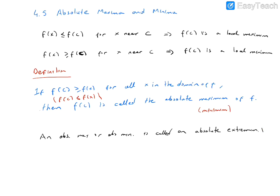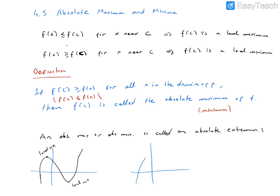For example, looking at this graph of the function, this is a local maximum value and this is a local minimum value — there is no absolute minimum or absolute maximum here. But if you consider the negative x-squared type function, this point is the absolute maximum. All absolute maxima are also local maxima, and all absolute minima are also local minima, as is clear from the definitions.